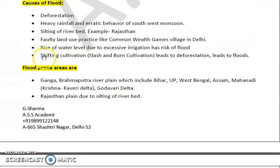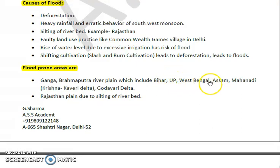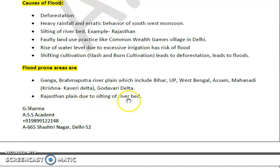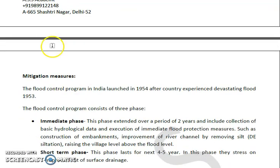Now let's see some flood-prone areas in India. These include the Ganga-Brahmaputra river plains, which generally include Bihar, Uttar Pradesh, and West Bengal. The Mahanadi, Krishna, Kaveri, and Godavari deltas are also flood-prone. The plains of Rajasthan are also potential flood-prone areas due to silting of river beds.